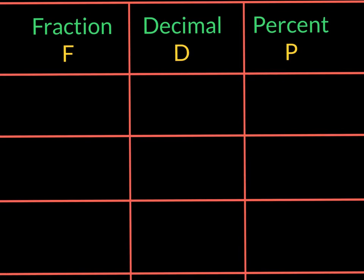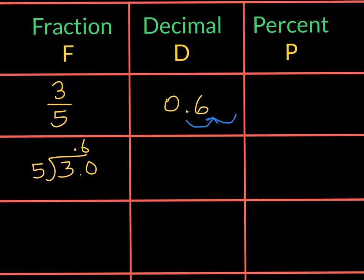Let's take a look at our first example. We will take the fraction 3 fifths. Now, to change it to a decimal, we will divide the numerator by the denominator and we will get 0.6. Now, to change this decimal to a percent, we will multiply it by 100, thereby moving the decimal place two times to the right, and we will get 60%.